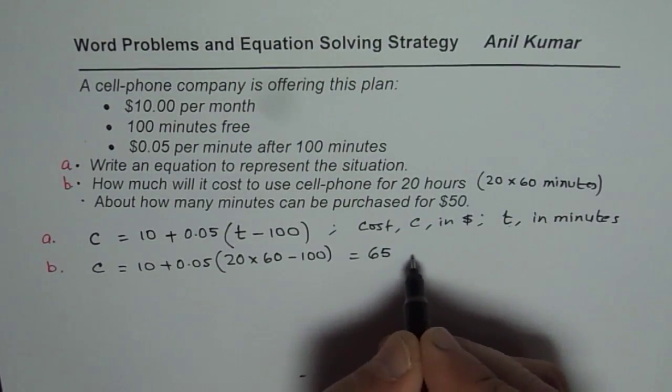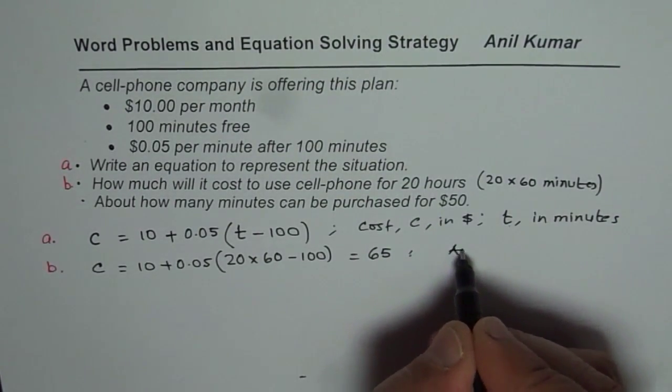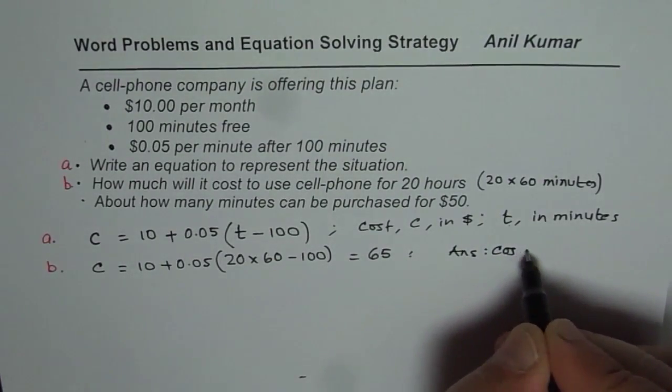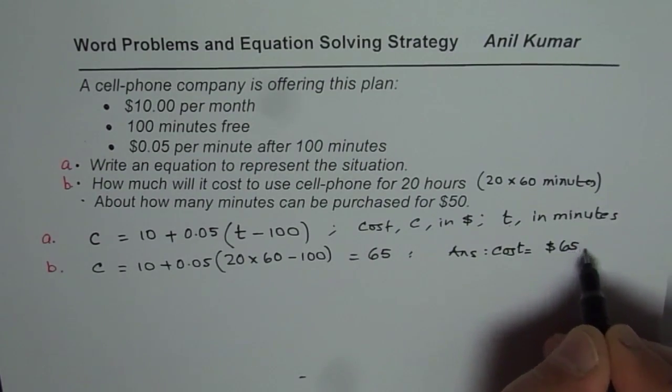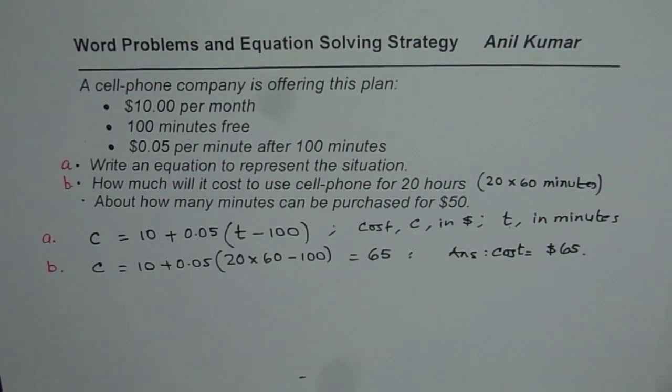So we get cost of 65 and that is, our answer is cost equals to $65. Now let us do part C.